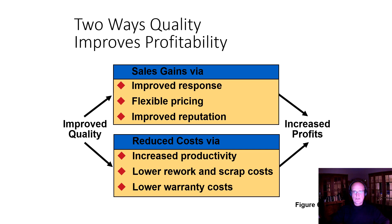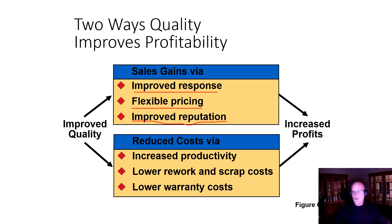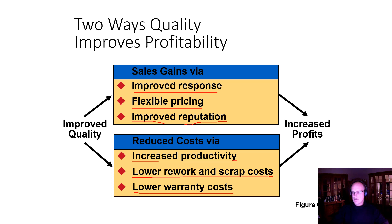There are two ways that quality improves profitability. It can increase sales by doing a better job of delivering what consumers want, by providing a price point that consumers want — sometimes that means engineering features out of a product — and by improving reputation. If you are consistently delivering, your reputation improves and you might sell more. Quality can also increase profits by reducing costs. You become more productive if you're producing consistently, you lower rework and scrap costs, you throw less things out, you fix fewer things before they leave, and you have lower warranty costs. Quality is across the organization.